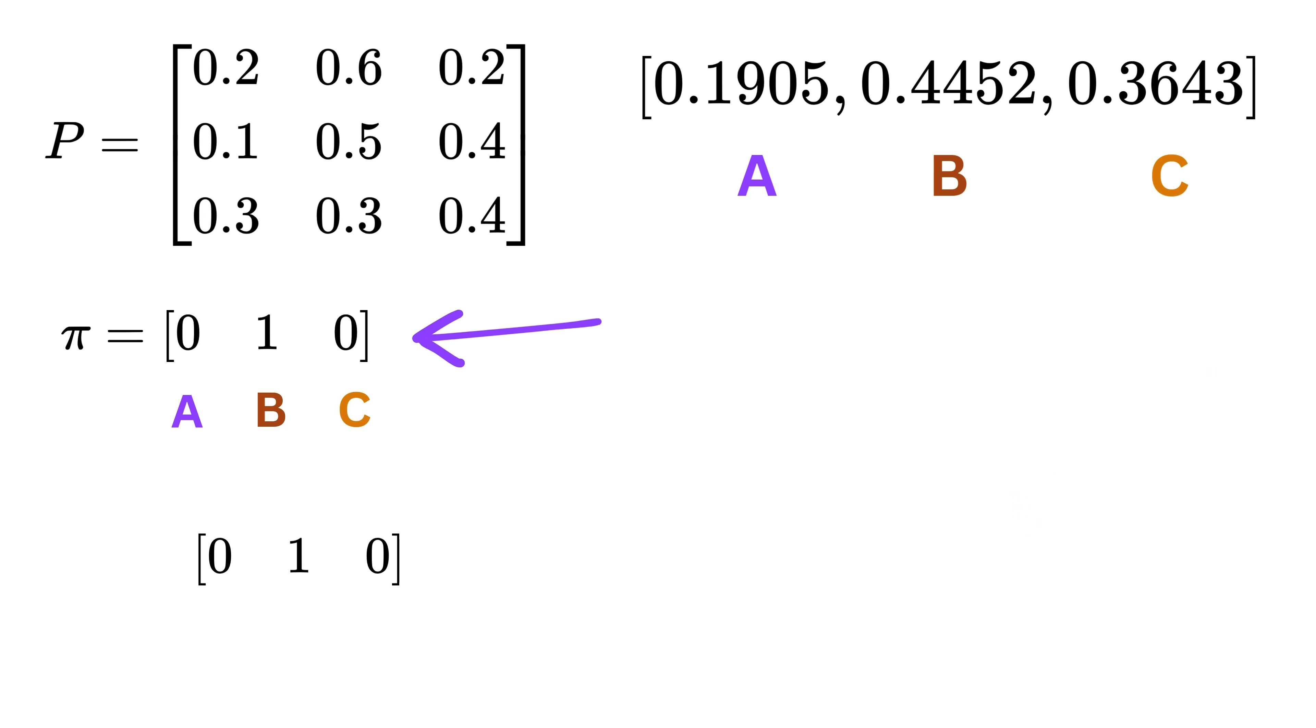Next, we multiply this vector with the transition matrix P. The result is a new vector that gives us the probabilities of the user being on each page after one step. We can take this new vector and multiply it again by P to get the probabilities after two steps and keep repeating this process.